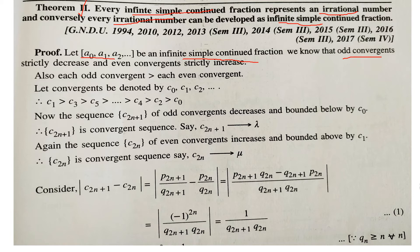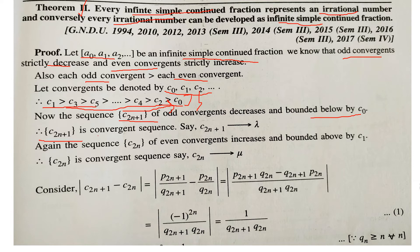We know that odd convergents strictly decrease and even convergents strictly increase. Taking the convergents c₀, c₁, c₂, ..., the odd convergents form a decreasing sequence bounded below by c₀, so this sequence of odd convergents is convergent — say its limit is λ. Similarly, even convergents are increasing and bounded above by c₁, so the sequence of even convergents is also convergent — say its limit is μ.